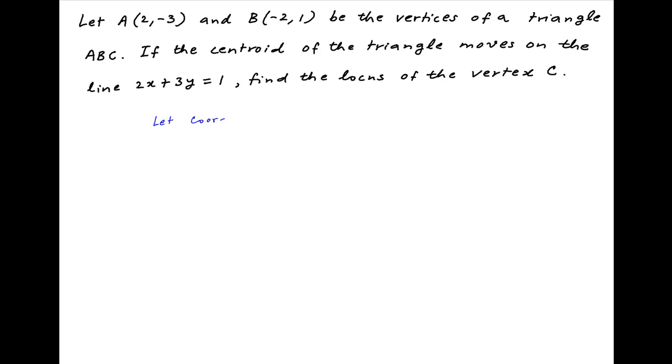Let's begin by assuming that the coordinates of vertex C are (h,k). Now the abscissa of the centroid of triangle ABC is obtained by taking the sum of the abscissas of the points A, B, and C and dividing by 3, and therefore the abscissa is (h + 2 - 2)/3.